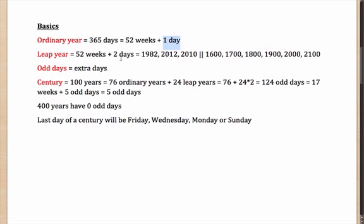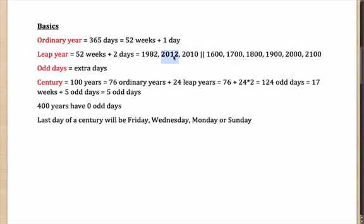It is important to identify which one is a leap year. Any year divisible by 4 is a leap year. To find divisibility by 4, you just need to look at the last two digits. For example, 1982: the last two digits are 82, and since 82 is not divisible by 4, 1982 is not a leap year. For 2012, 12 is divisible by 4, so 2012 is a leap year — as you might have noticed, 2012 did have a 29th of February. 2010 is not a leap year because 10 is not divisible by 4.